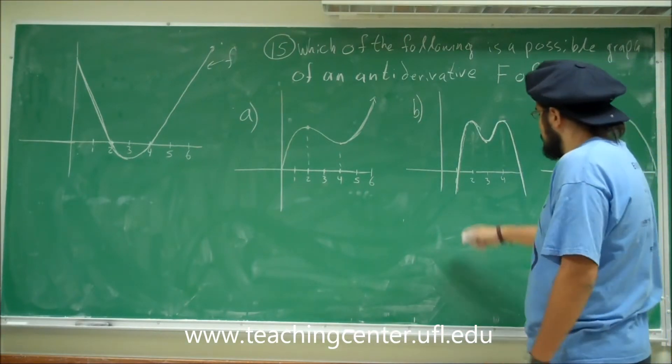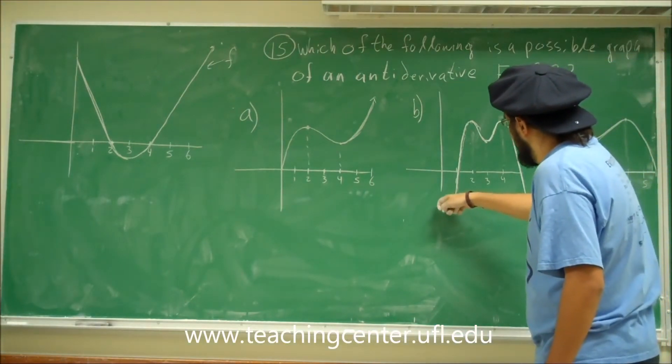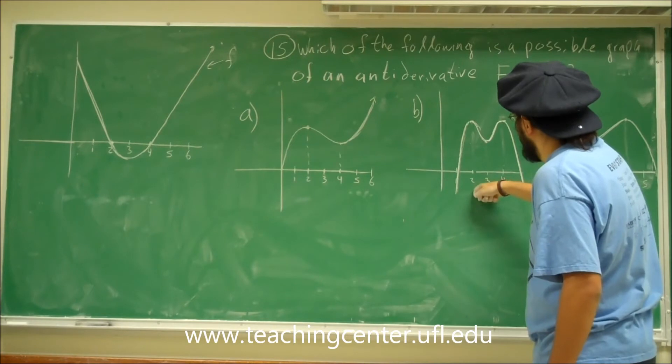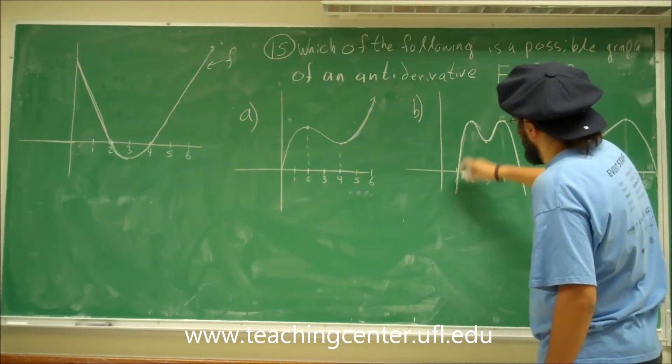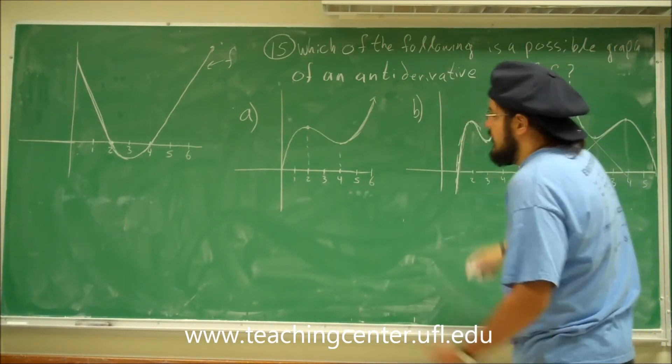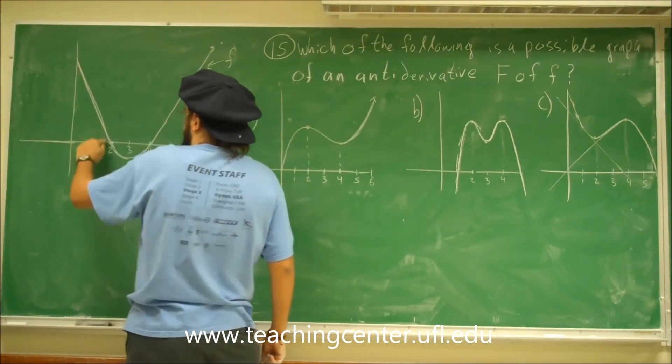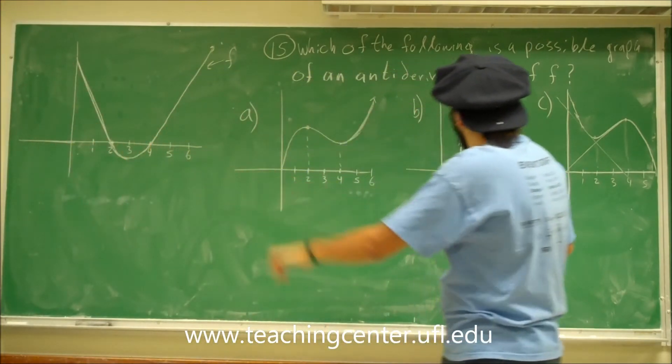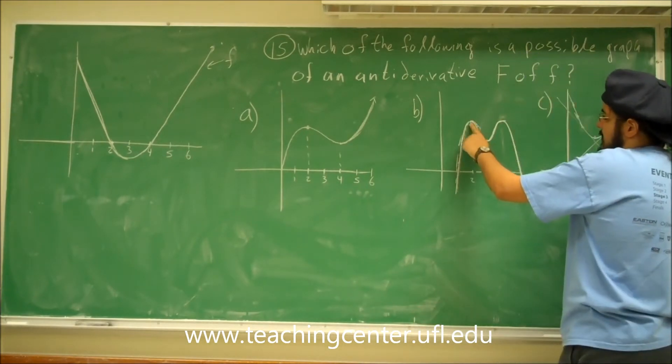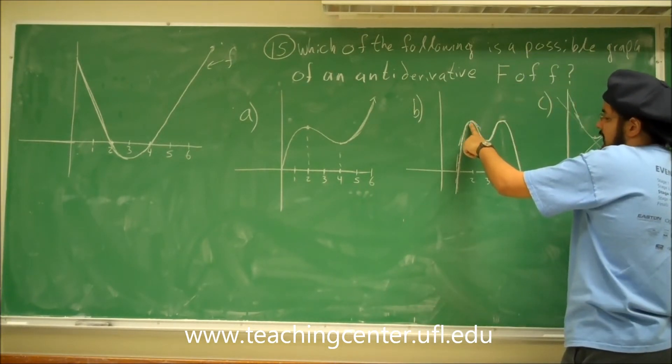Let's look at b now. So between zero and two, this has positive slopes, right? All positive slopes. And that's fine, because these are all positive y values. So from zero to two, these are all positive y values. At two, it's zero. So that means that there's a max there. That's fine.